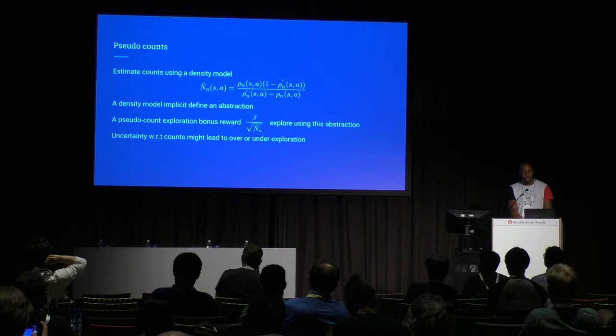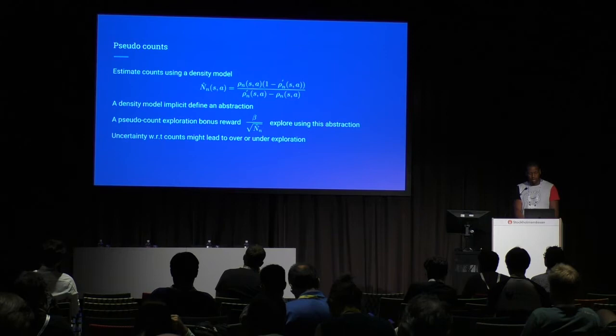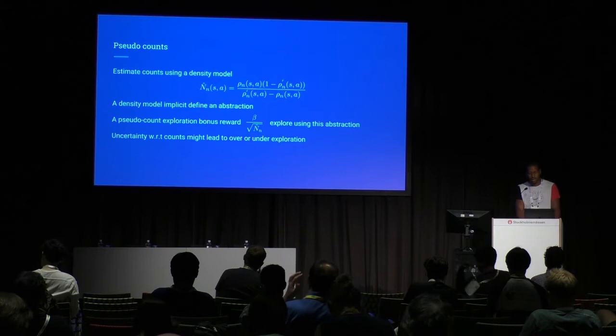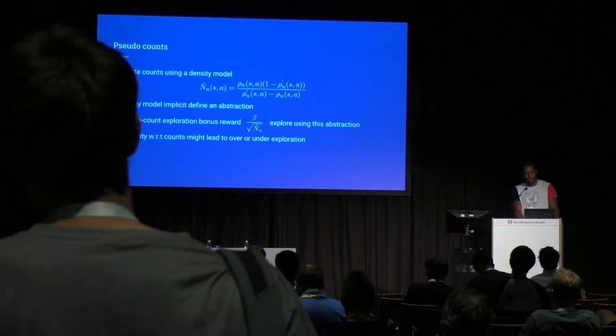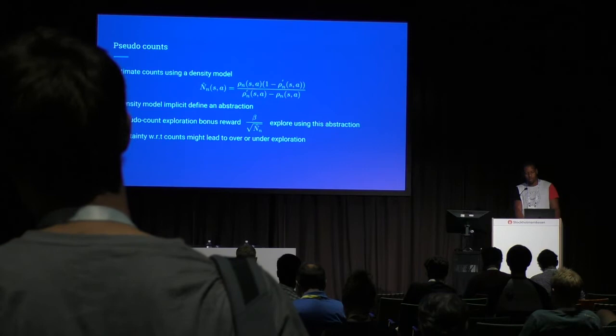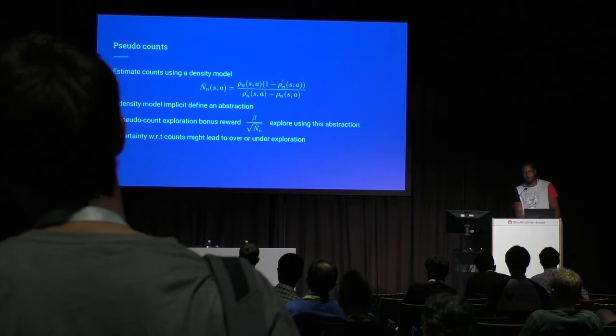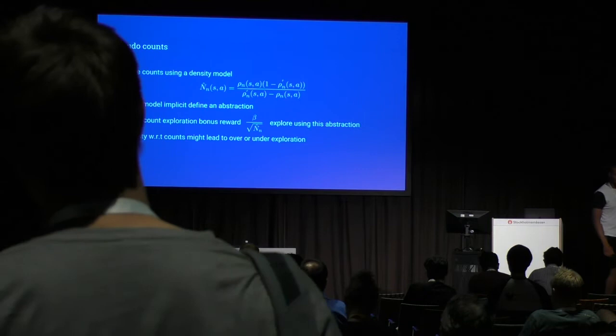If you want to estimate counts, pseudo-counts were introduced as a way to estimate counts using a density model. We found that the density model implicitly defines an abstraction, and using an exploration bonus with pseudo-counts incentivizes exploration within this abstraction. Unfortunately, uncertainty in the count may lead to over-exploration — where the agent takes too long — or under-exploration, causing exploration to fail. Come by our poster for more detail.